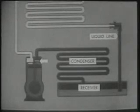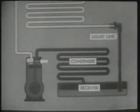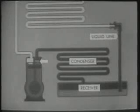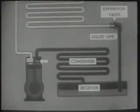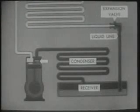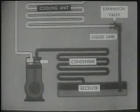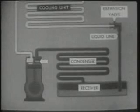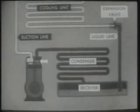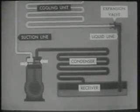The low pressure side is that part of the system through which the refrigerant moves under low pressure. This side starts at the expansion valve, which divides the high and low pressure sides, and includes a cooling unit or evaporator, the suction line, and the suction valve of the compressor.